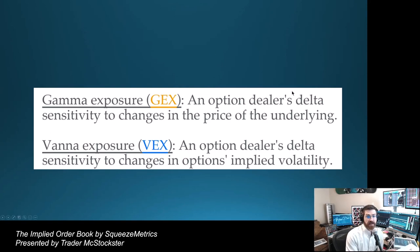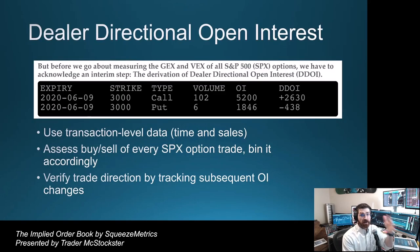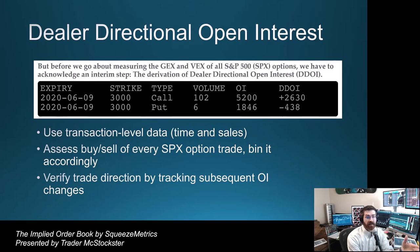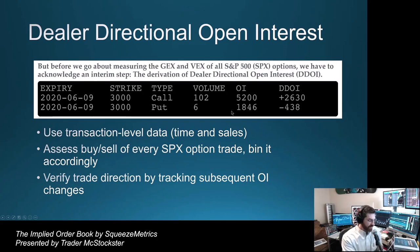They define GEX — gamma exposure — as the option dealer's delta sensitivity to changes in the price of the underlying. And VEX — vanna exposure — as an option dealer's delta sensitivity to changes in the option's implied volatility. This is a new addition not in the last paper. They're going to use transaction-level data, or time and sales, to assess the buy and sell of every SPX option trade and bin it accordingly. Then the next day, they verify the trade direction by tracking subsequent OI changes — that third bullet point is the key, because that verification step is the good stuff.